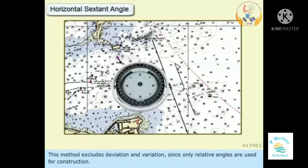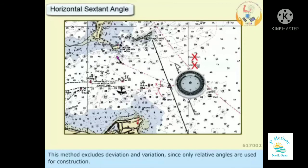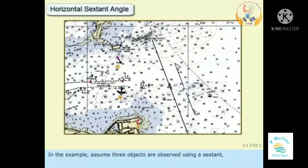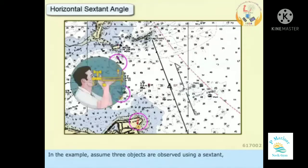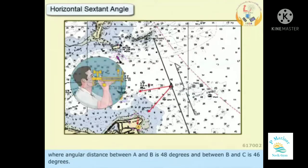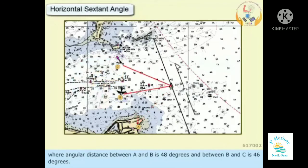This method excludes deviation and variation, since only relative angles are used for construction. In the example, assume three objects are observed using a sextant, where angular distance between A and B is 48 degrees and between B and C is 46 degrees.